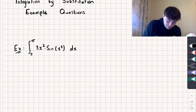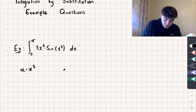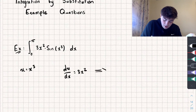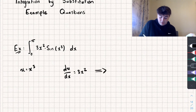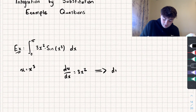So we're going to set u equal to x cubed, and then we get that du/dx is equal to 3x squared. Rearranging — treating that like a fraction — to get dx as the subject, we get dx is equal to du divided by 3x squared.